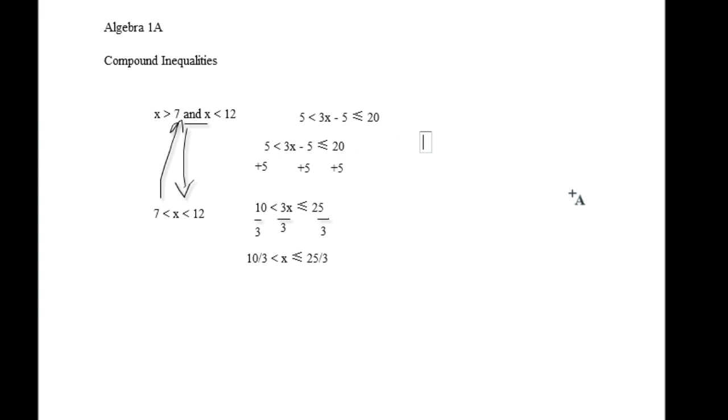Or, you can actually break it apart into its two separate parts. 5 is less than 3x minus 5, and 3x minus 5 is less than 20. Now you'll be surprised to know that when you get down to solving it and get everything all taken care of, 10 is less than 3x, it's going to look very similar to what we just did. So what you're going to get is 10 thirds is less than x, and x is going to be less than or equal to 25 thirds.